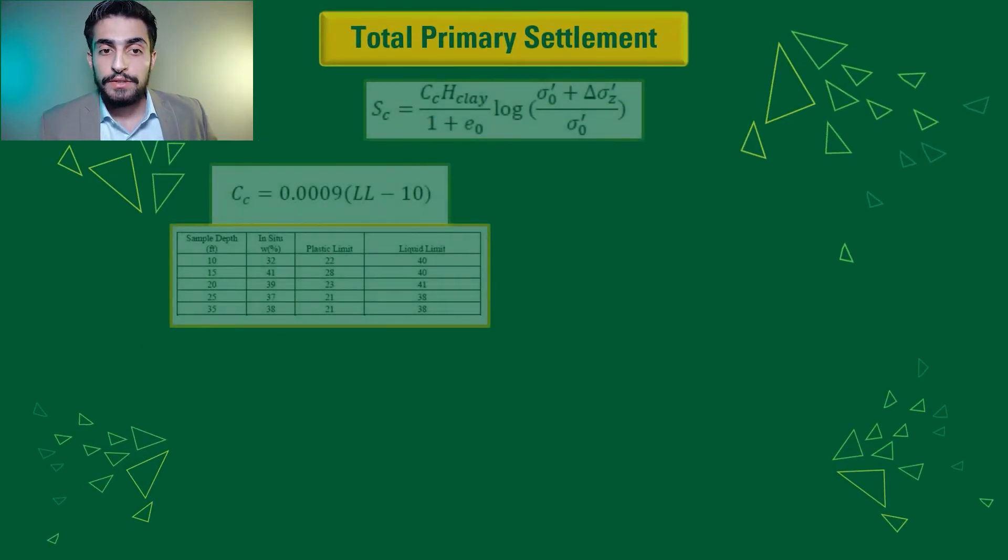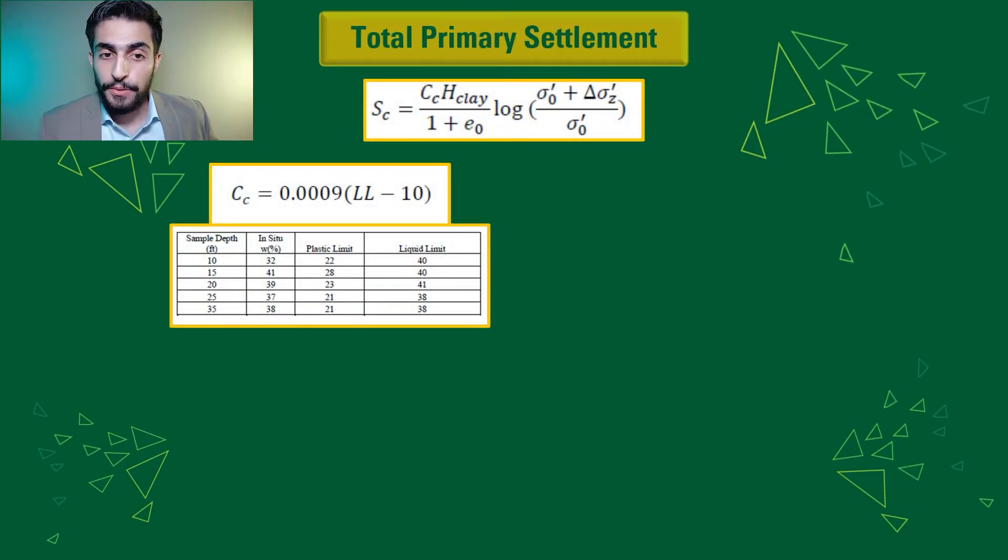After that, we use all those values to plug into this equation for total primary settlement, where CC in this equation is the compression index, which is found from the liquid limit of the clay layer, where we calculated the average to be 39 percent liquid limit, which eventually gave us a compression index of 0.261.